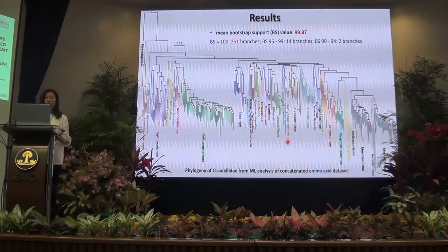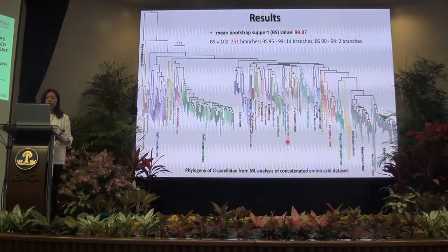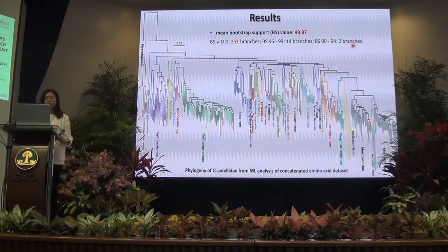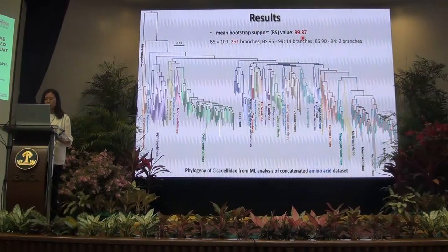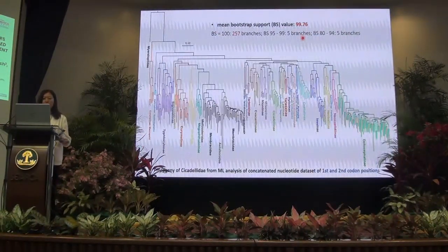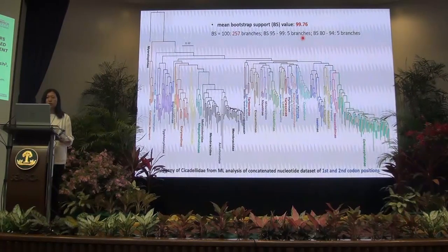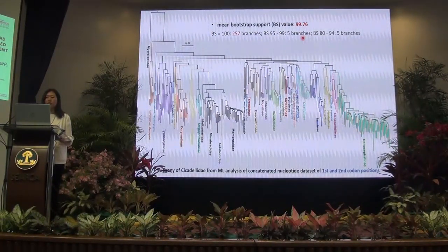Here is the maximum likelihood tree based on the concatenated amino acid dataset. The tree received maximum likelihood bootstrap support for nearly all branches. Only two branches got bootstrap values below 95%, and the average bootstrap value is near 100%. The maximum likelihood tree based on the first and second codon positions also receives very high bootstrap values for nearly all branches, although some relationships are not consistent with the amino acid tree.